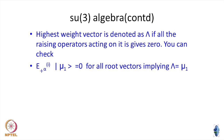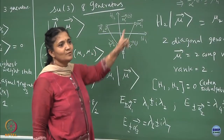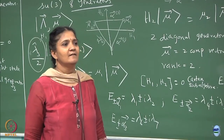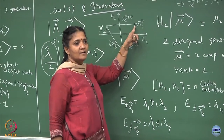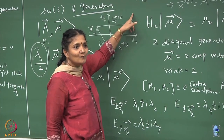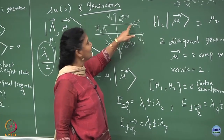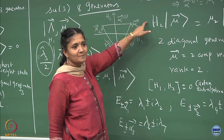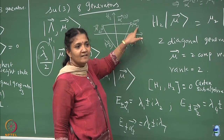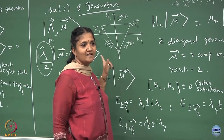The highest weight vector is denoted as lambda — if all the raising operators acting on a particular weight vector give 0, that is what I wrote here: if it is going to be 0 for all i which is 1, 2, and 3, then you call this to be the highest weight vector and you denote mu_h as lambda. So in this case, which one is the highest weight vector? This one — if you try to raise it, it has to go above, which is not possible.